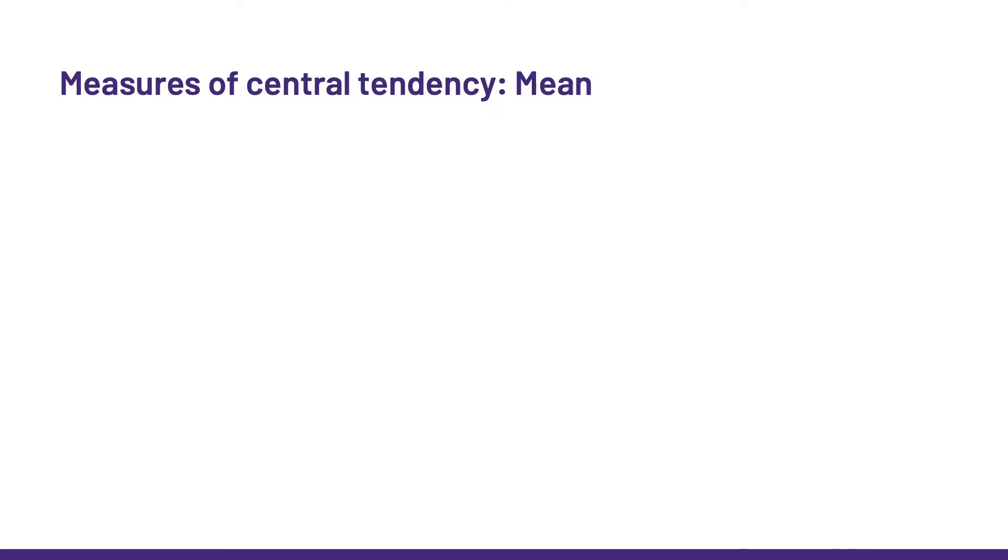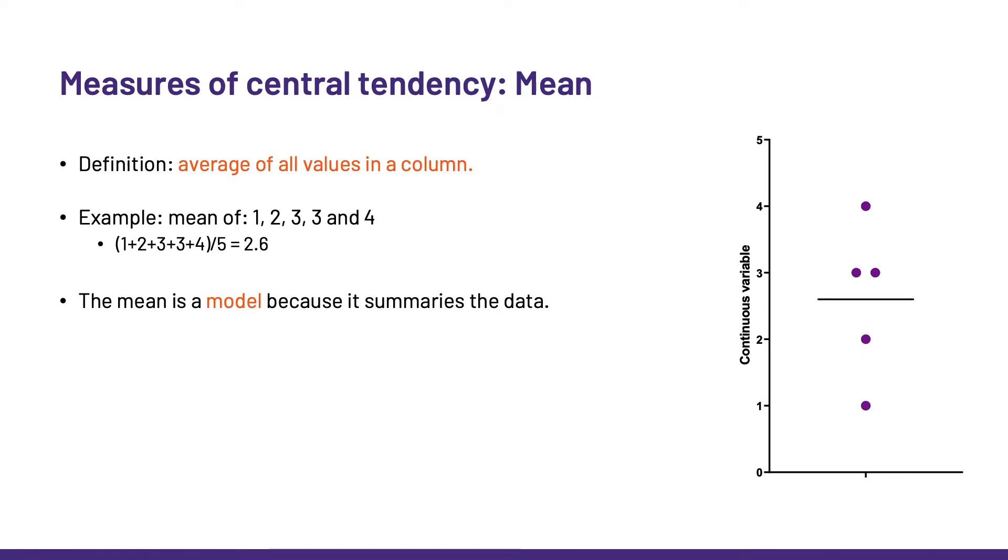And then there is the mean, also called the average when arithmetic. Super easy to calculate. We take a bunch of numbers and we divide the sum of them by the sample size. Now, the thing we tend to forget about the mean is that it is a model. A very simple one, but a model nevertheless, because it summarizes the data.